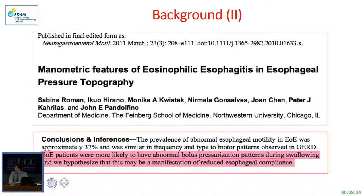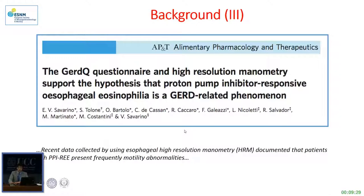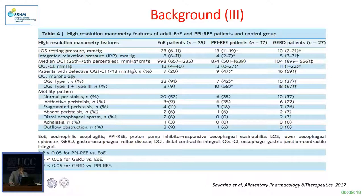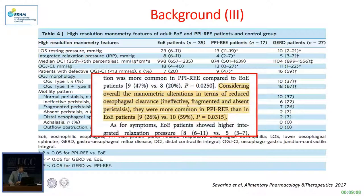Recently, we found that esophageal motility abnormalities are more frequent in PPI-responsive esophageal eosinophilia, and this condition may be related to a connection with GERD disease. In particular, considering manometric alterations in terms of reduced esophageal clearance — ineffective, fragmented, and absent peristalsis — these were more common in PPI-responsive esophageal eosinophilia than in EoE patients.